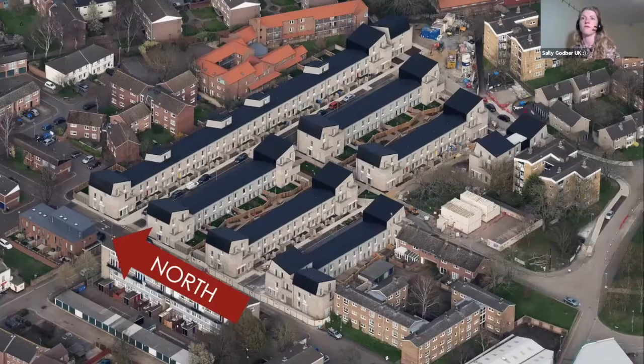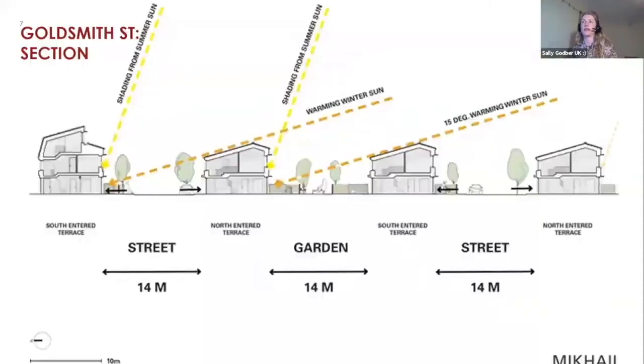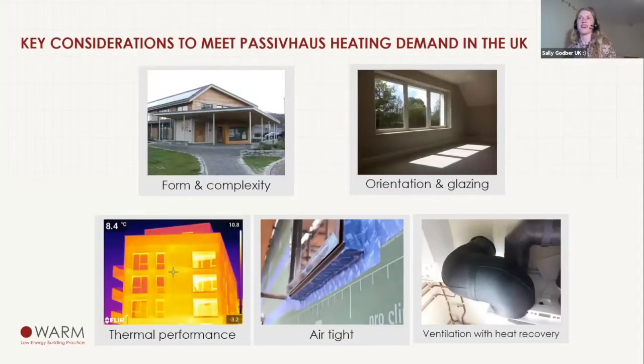When we got involved, there had already been some work done on the design. The architects had really got hold of this concept of solar design and trying to maximize solar gain across the site. They had set out the spaces between the terraces with the street, garden, and street spaces. This was a great starting point from our perspective. We weren't so keen on the massive amounts of solar gain, but the streetscape seemed to work really well.